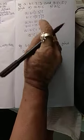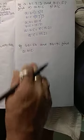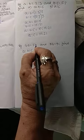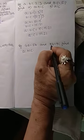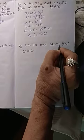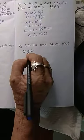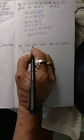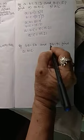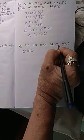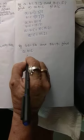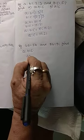Now let us go to another one. If 4A = 5B and 8B = 9C, find A:B:C.